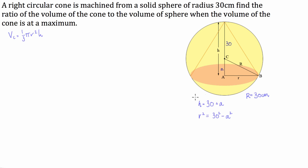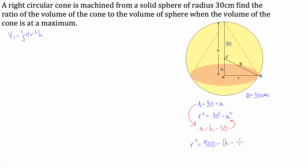Now let's make A in terms of H. We're going to have A is equal to H take 30, and then we're going to substitute this in for A in this formula. So r squared is equal to 30 squared, which is 900, minus A squared, which is (H − 30) squared.